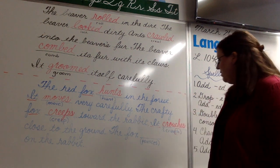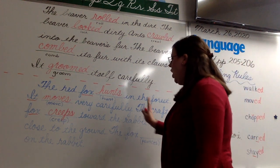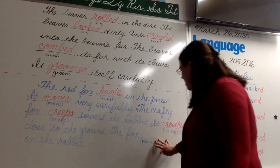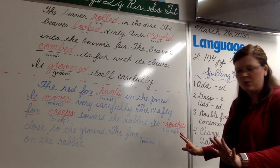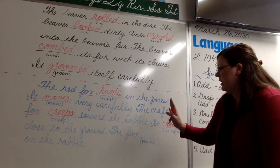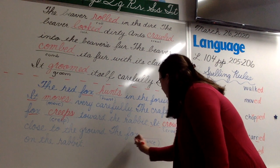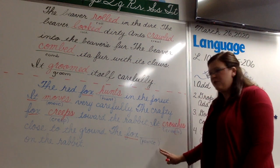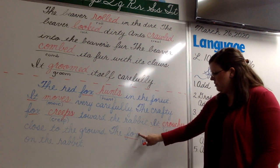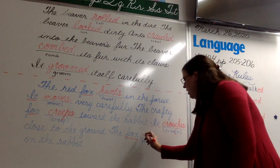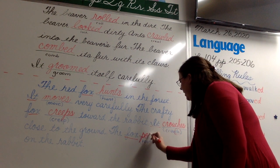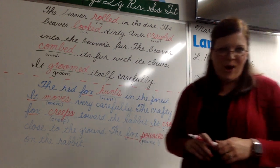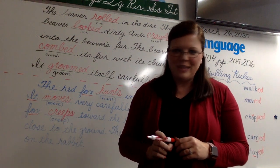The fox blank on the rabbit. The subject is fox — how many foxes do we have? Just one. If the subject is singular, the verb needs to be singular. No volleyball on fox, so there has to be a volleyball on the verb — we're going to add an S. The fox pounces on the rabbit. Now let's take a look at the bottom section of your book.